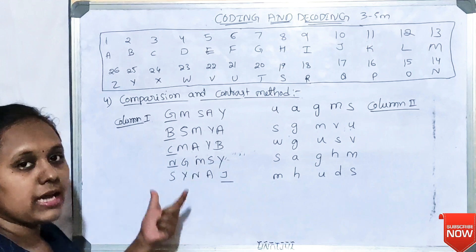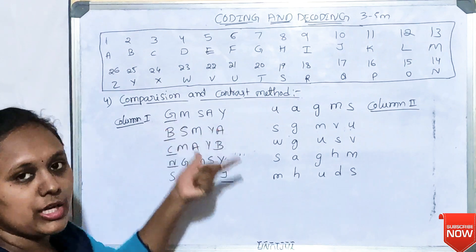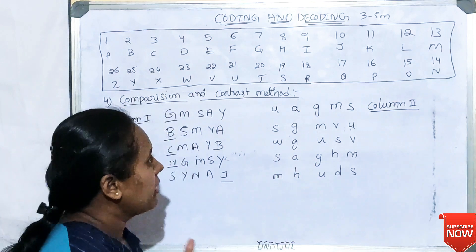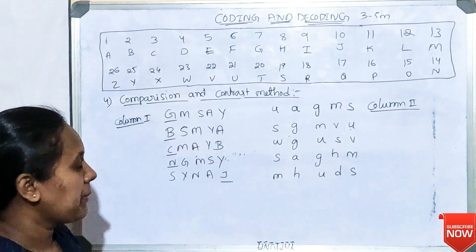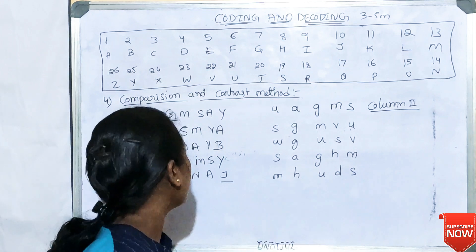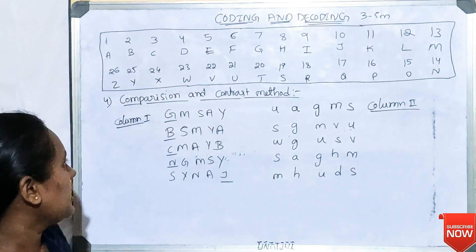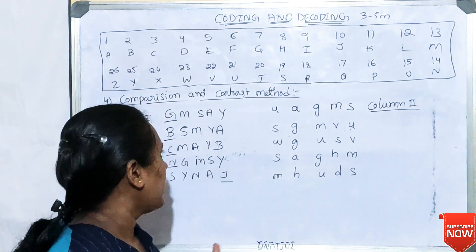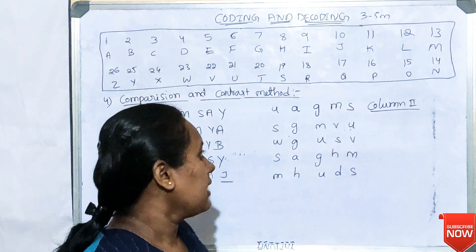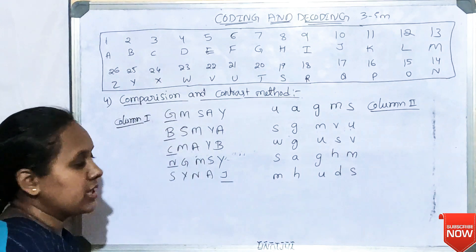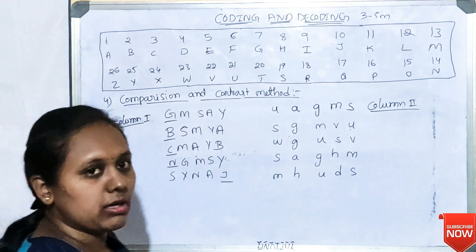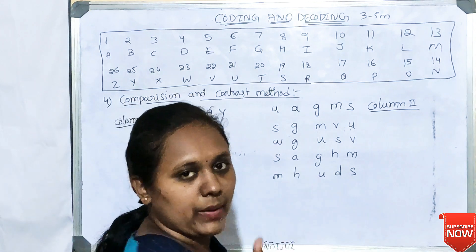The next type of pattern is the comparison and contrast method, which is very important. This method uses two or more rows of coded phrases. You are given columns of phrases with their particular codes, and you need to identify the letter codes by comparing the rows.